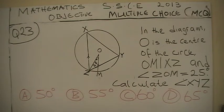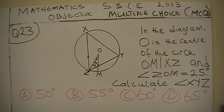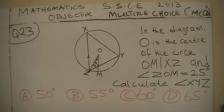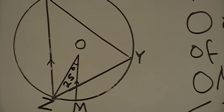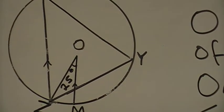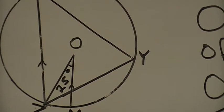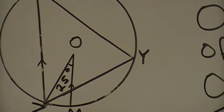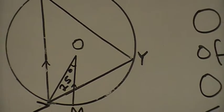In the diagram, O is the center of the circle. O, M and S, Z are points, and angle ZOM is equal to 25 degrees.